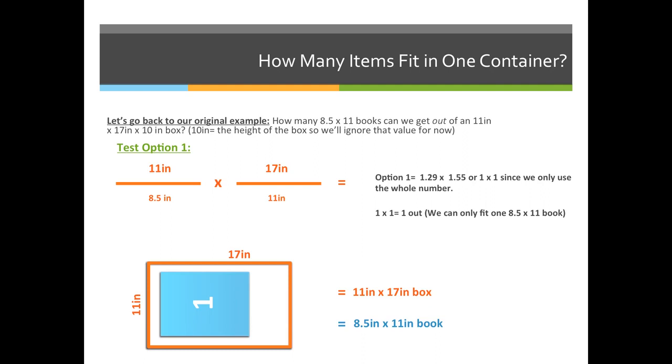So the box length is 11 times the box width is 17 divided by the book length, which is 8.5 and divided by the book width, which is 11. When you divide this, you should come up with 1.29 by 1.55. But because we don't keep any decimals, we're going to drop off the decimals in the problem. And we get 1 times 1.